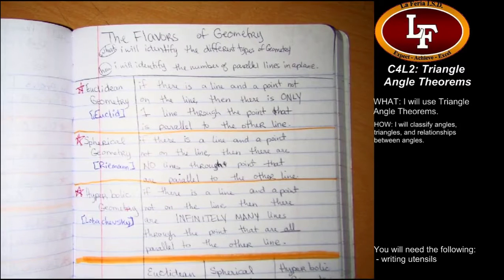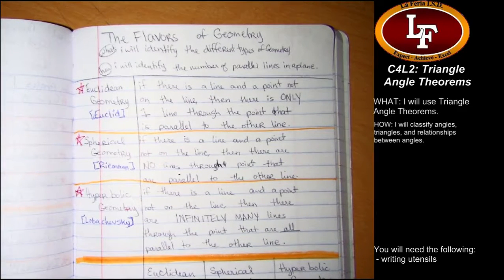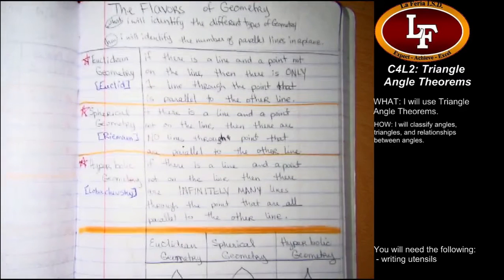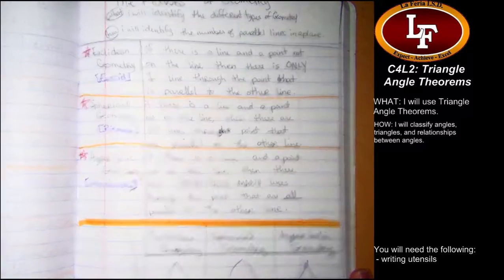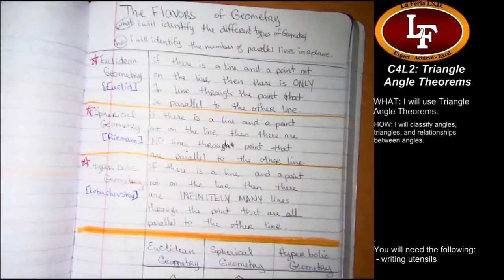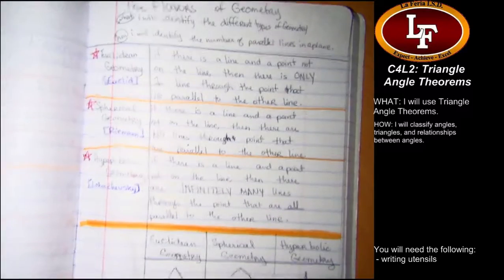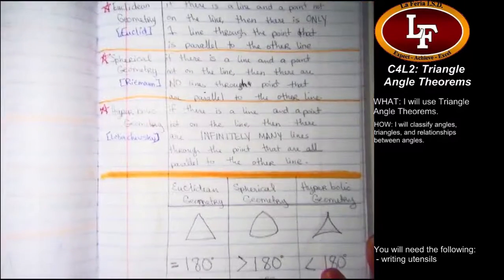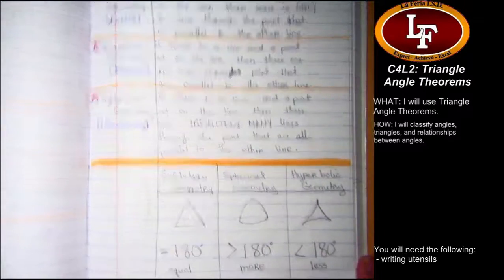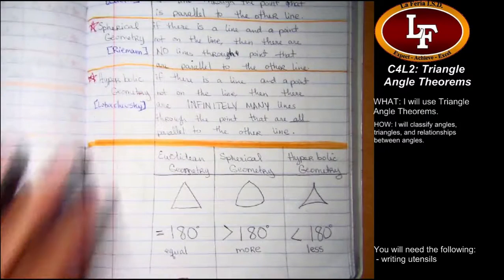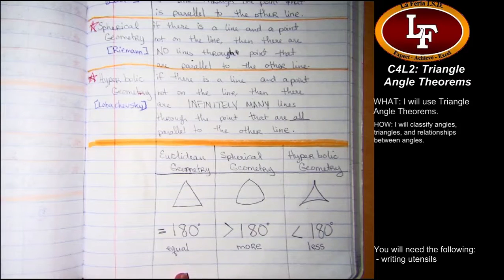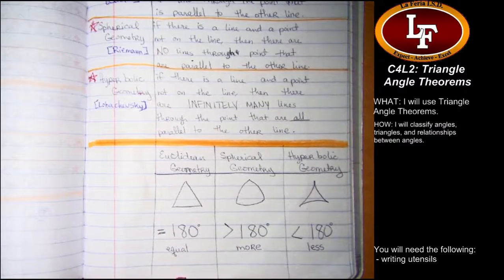In yesterday's conversation, we found the three different flavors of geometry. We saw Euclidean, which was very flat, spherical, which was on the surface of a ball or the globe of the Earth, and then hyperbolic, which was on really weird, floppy paper, and everyone's brain kind of exploded. And we ended the conversation yesterday by talking about what happens when you add up the measures of the triangles that are drawn on these three different types of surfaces.